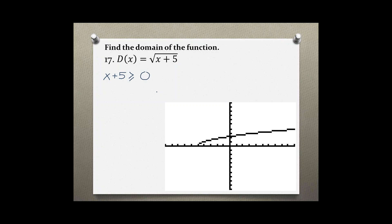This is the standard way of finding the domain of radical functions. Then solve for x. We subtract 5 from both sides, which gives us x ≥ -5.